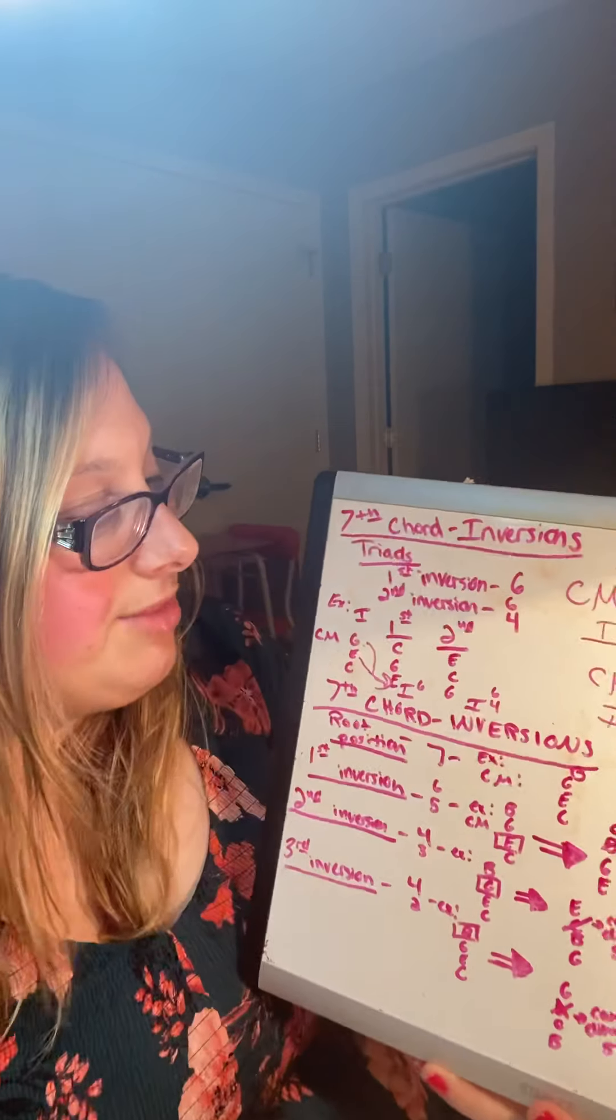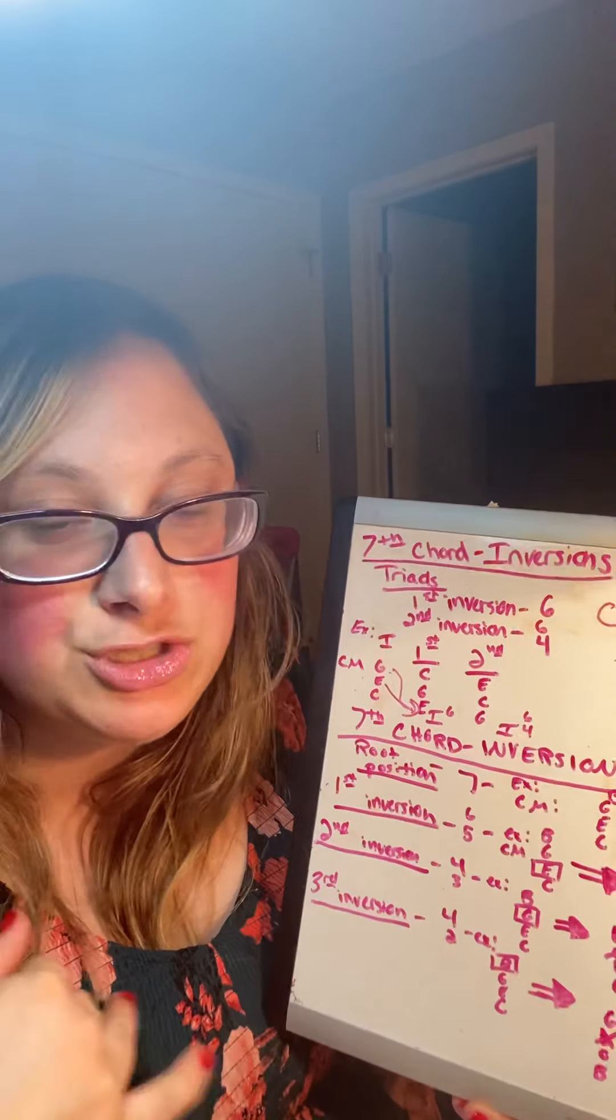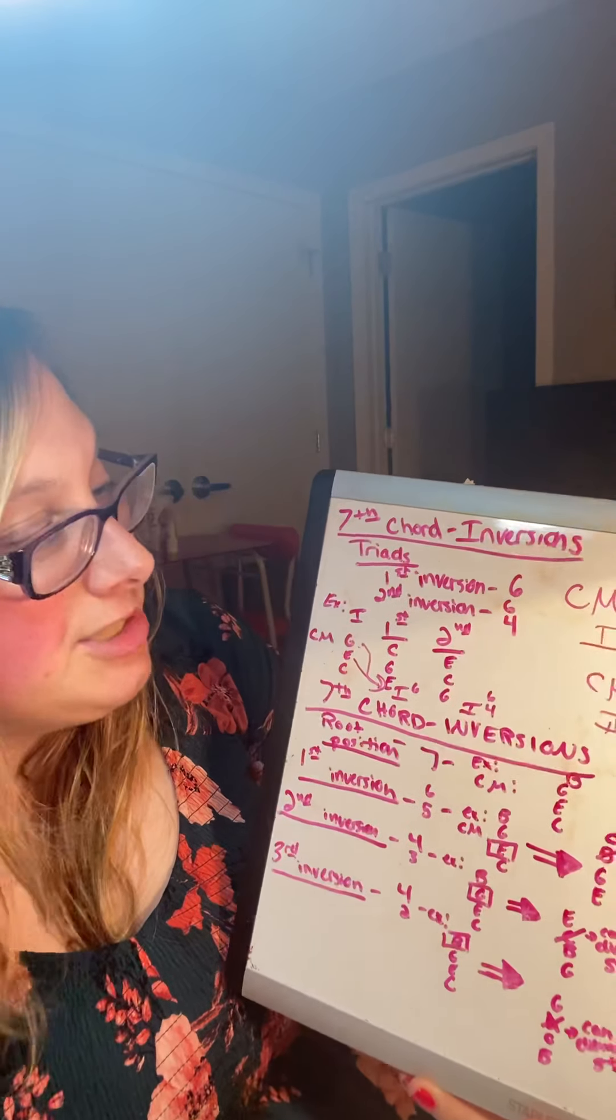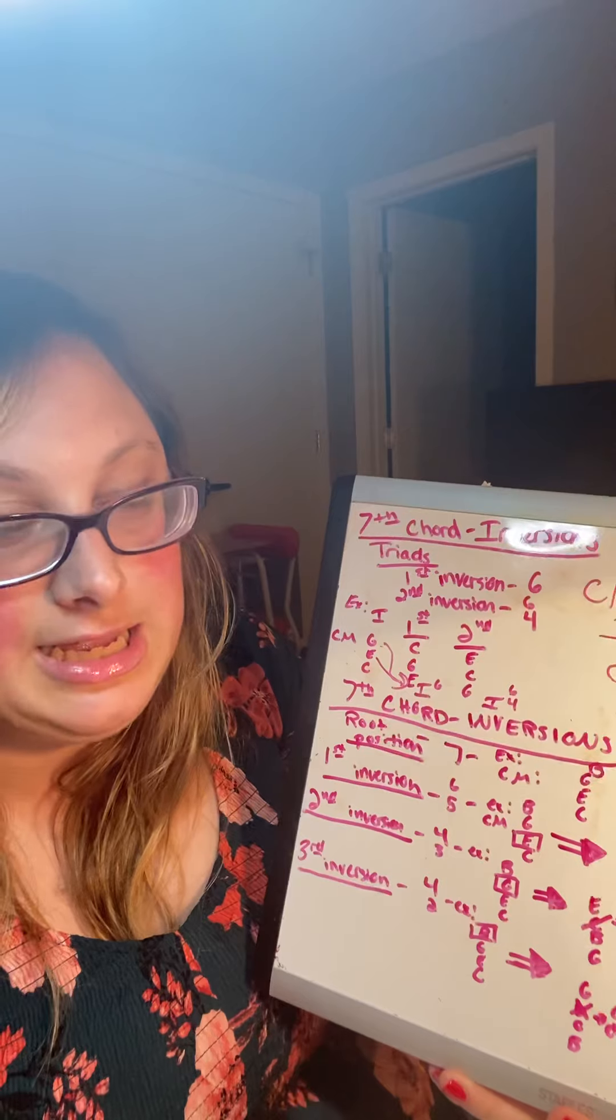So the first thing we're talking about are not seventh chords, we're just going to talk about straight triads or a chord. So in C major, C major chord would be C, E, G, right?